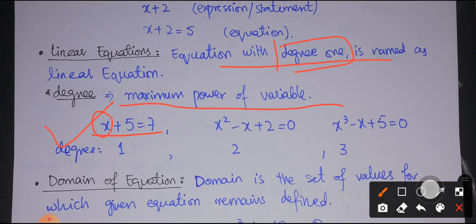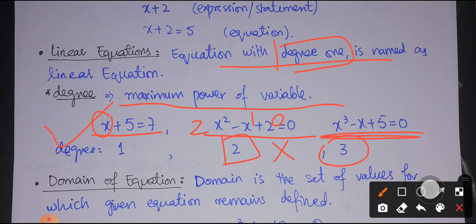In the equation 'x² minus x plus 2 equals 0,' we have three terms. The degree of x² is 2, the degree of x is 1, and the constant term has degree 0. The maximum power of the variable is 2, so its degree is 2 — this is a quadratic equation, not a linear equation. Similarly, if the maximum power is 3, it is a cubic equation.